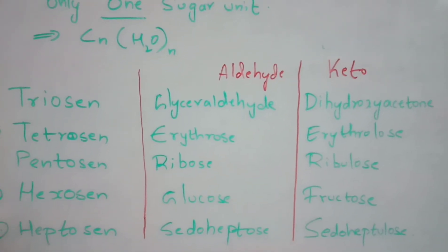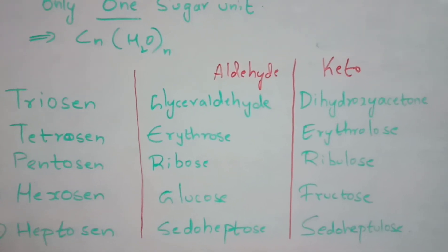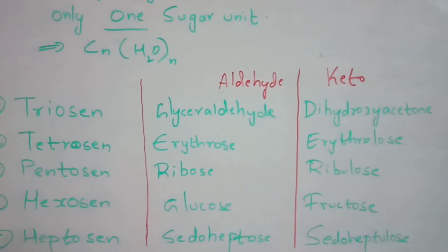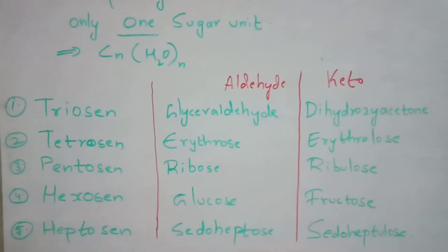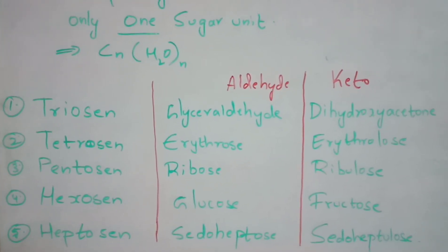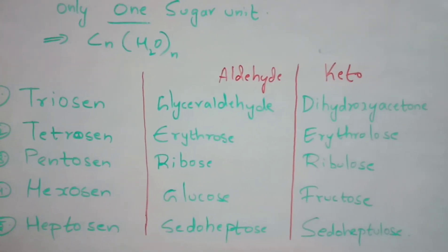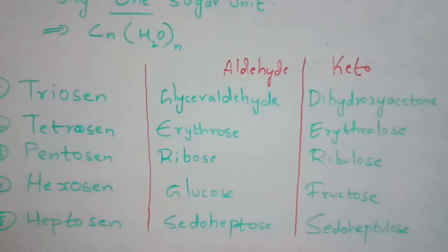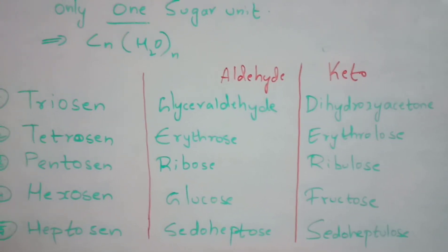There are a number of aldehyde and keto groups present in carbohydrates. For trioses: the aldehyde group is glyceraldehyde and the keto group is dihydroxyacetone. For tetroses: aldehyde is erythrose and keto is erythrulose. For pentoses: ribose (aldehyde) and ribulose (keto). For hexoses: glucose (aldehyde) and fructose (keto). For heptoses: pseudoheptose and pseudoheptulose. Most monosaccharides are hexoses containing glucose and fructose.